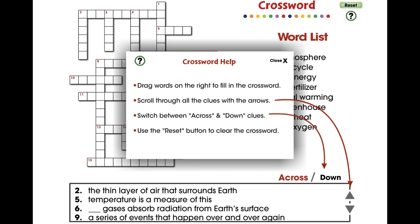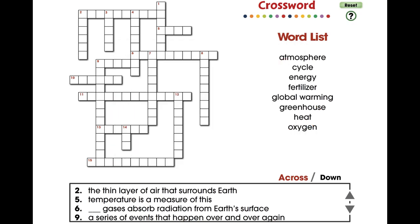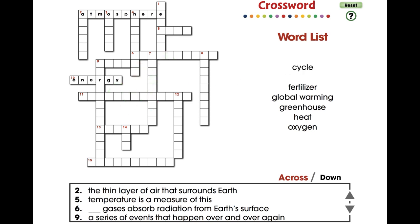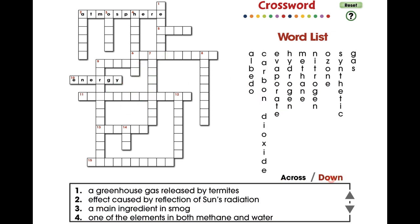In this crossword mini, 17 vocabulary words are provided with across and down clues. For middle school, this mini is great for vocabulary and comprehending all the words centered around the topic of global warming causes.